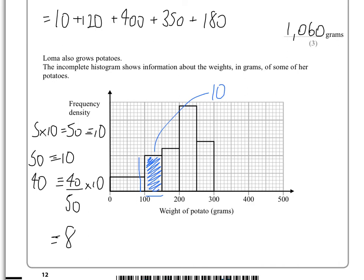Now we're told in part C that there's 12 potatoes which have a weight between 300 and 450. We know there's going to be 12 there, so we have to use the same sort of ratios. Let's look at what we do know.